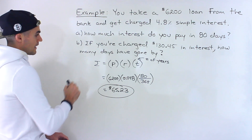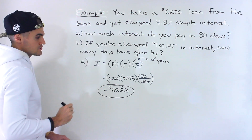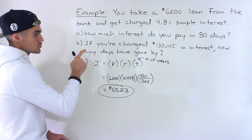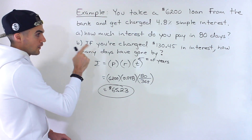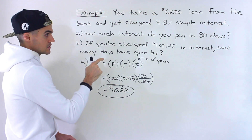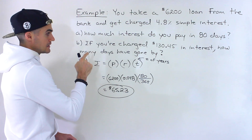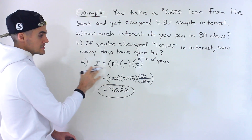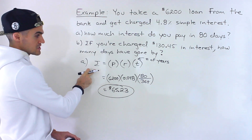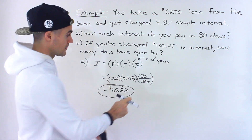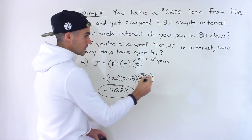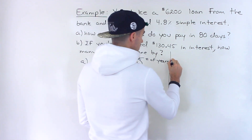That's the amount of interest charged in 80 days. When you do all of that, you would end up with $65.23 of interest. So that would be the answer to Part A. For Part B, if you're charged $130.45 in interest, how many days have gone by?